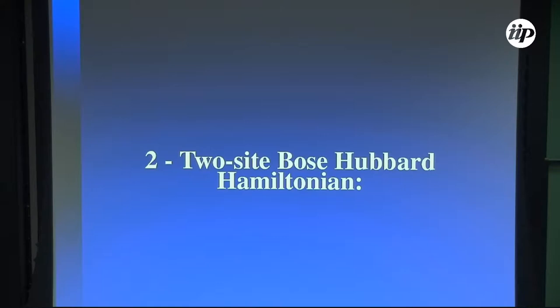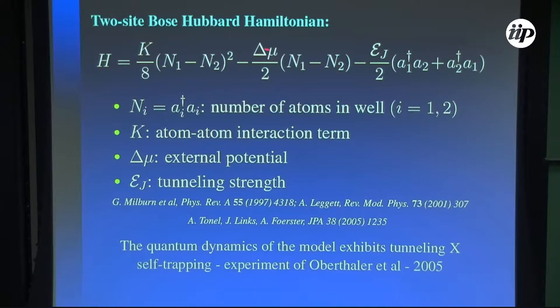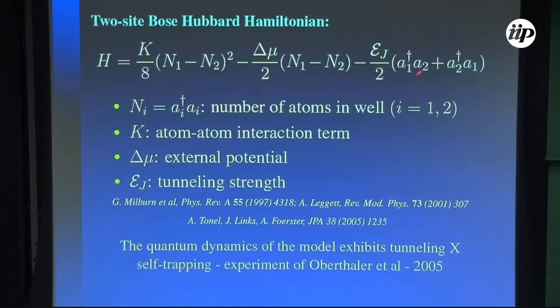Let me present a very simple model which is the two-site Bose-Hubbard model. We have two wells, N1 particles in well 1 and N2 particles in well 2. A1 destroys an atom in well 1, A1-dagger creates an atom in well 1, and similarly for well 2. K is the atom-atom interaction term, delta-mu is an external potential measuring the asymmetry between the wells, and epsilon is the coupling for the tunneling. Although very simple, this model captures very interesting physical properties. If you study the quantum dynamics, you can clearly see that this model exhibits tunneling and self-trapping in qualitative agreement with the experiment of Markus Oberthaler.